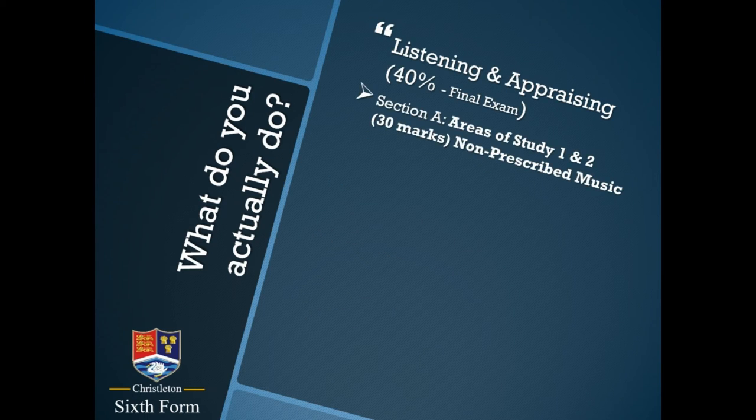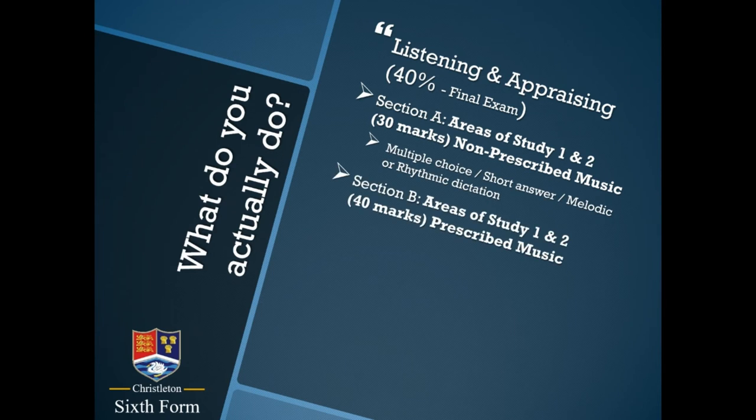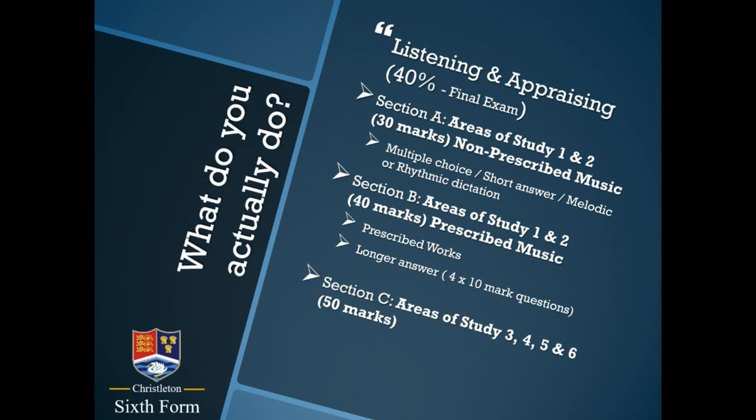The final 40% is made up of the written exam. More than half of the course is practical, but you do have to study for this written exam at the end. There's a breakdown of the sections on the exam. Section A is short one, two, maybe three mark questions about musical details in music you will not have previously studied. Section B is 40 marks, four 10-mark questions about pieces of music that you will study during the course. The final section is two essay style questions regarding the other areas of study.